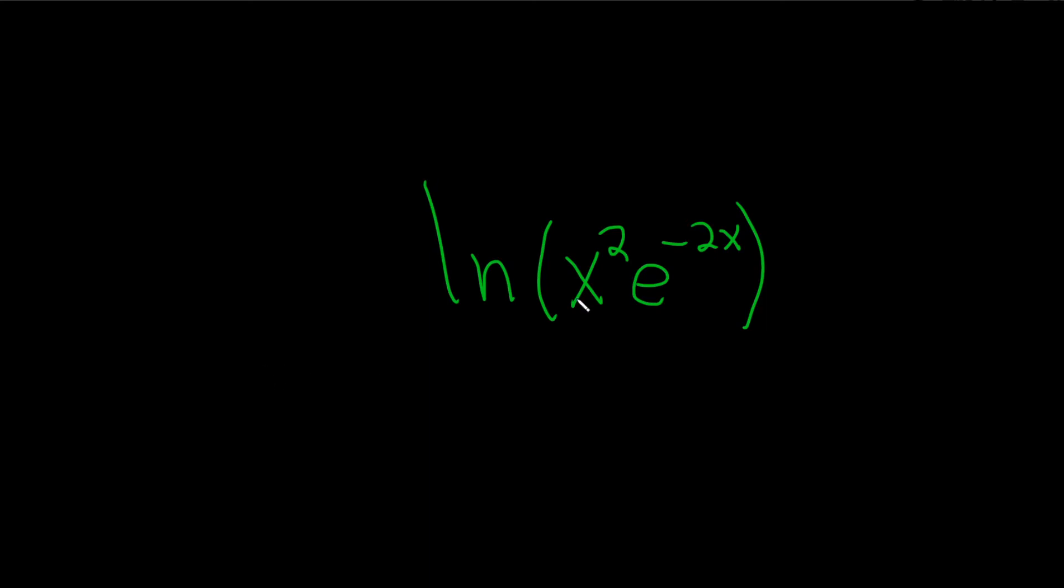Simplify the expression. We have the natural log of x squared times e to the negative 2x. So we have a product, and we're going to start by using something called the product rule.